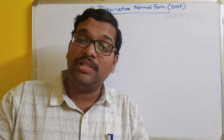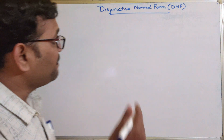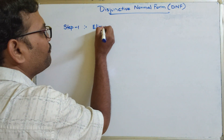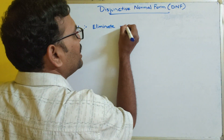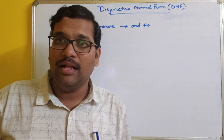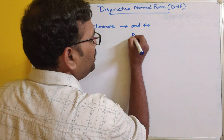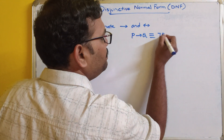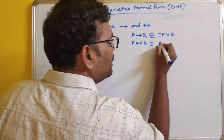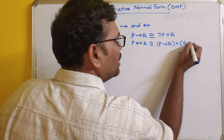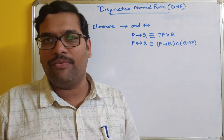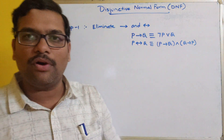Let us recall the steps. Step one: eliminate conditional and biconditional. We eliminate the conditional and biconditional by using different formulas. P implies Q can be written as negation P or Q. Similarly, P biconditional Q can be written as P conditional Q and Q conditional P. By using these two formulas we have to eliminate the conditional and biconditional connectives in our formula.